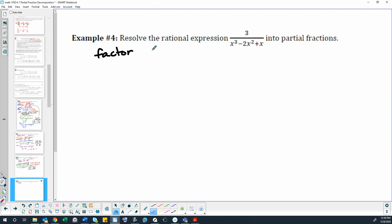The first thing I'm going to do is factor out the greatest common factor, which is x, and that leaves me with x squared minus 2x plus 1.